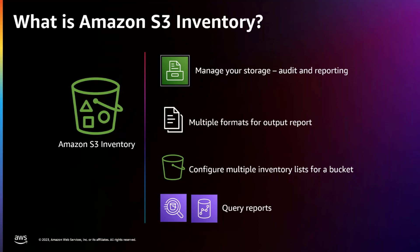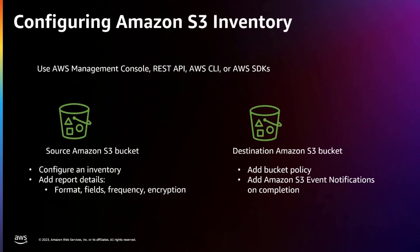Now I'll dive into how to configure your bucket with S3 inventory. The easiest way is using the AWS Management Console, but you can also use the REST API, AWS CLI, or AWS SDKs. The bucket that inventory lists objects for is called the source bucket. The source bucket contains the objects listed in the inventory and the configuration for the inventory. You can configure the report format, what fields to include, how often you want the report — daily or weekly — and even choose encryption on the report itself.